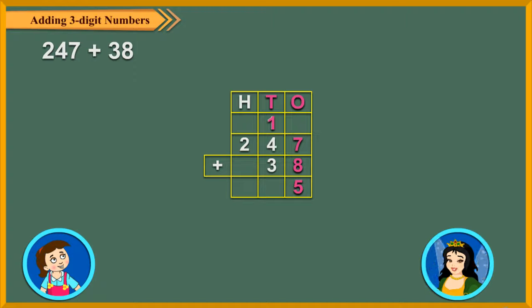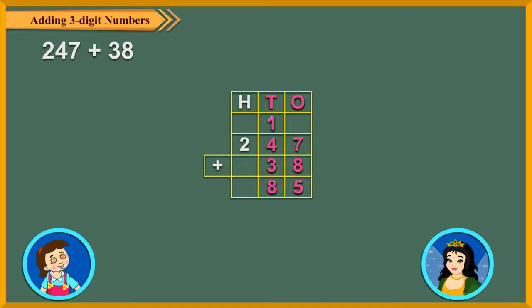Next, add the tens digits. 1 ten carried over plus 4 tens plus 3 tens is equal to 8 tens. So write 8 in the tens column. Finally, add the hundreds digits. 2 hundreds plus 0 hundreds is equal to 2 hundreds. So write 2 in the hundreds column.